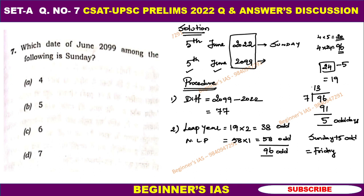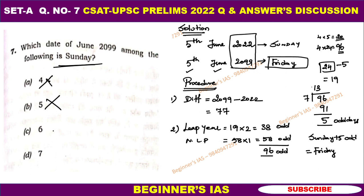Sunday plus 5: Monday, Tuesday, Wednesday, Thursday, Friday. Therefore 5th June 2099 is a Friday. After knowing this, we identify Sunday. 4th June is Thursday — eliminate. 5th June is Friday — eliminate. 6th June is Saturday — eliminate. Therefore 7th June is Sunday. Therefore 7th June 2099 is the Sunday.